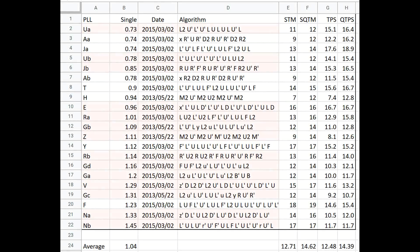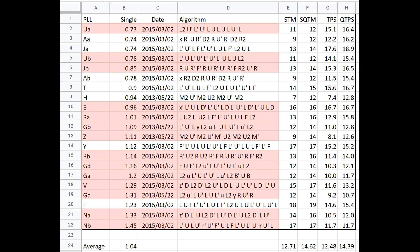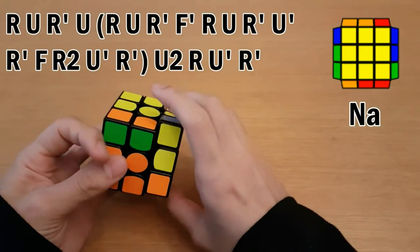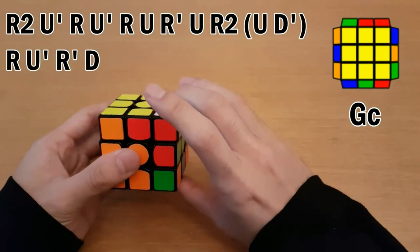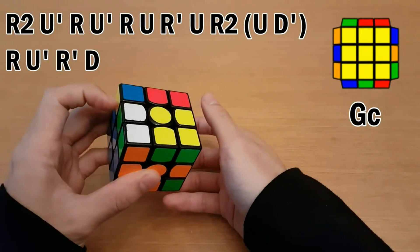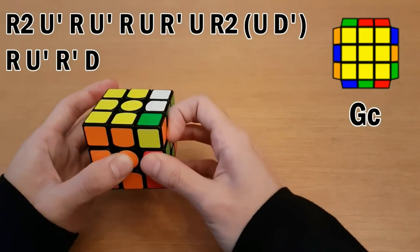So since then, I've actually changed 14 of my 21 PLL algorithms to be better ones, at least ones that are better for me. I've worked on implementing a variety of finger tricks, some of them more creative than others, and I've practiced these in thousands of solves, and practiced these algorithms on their own as well.